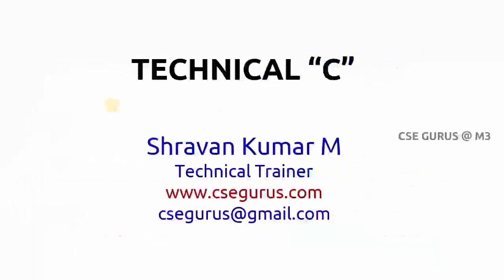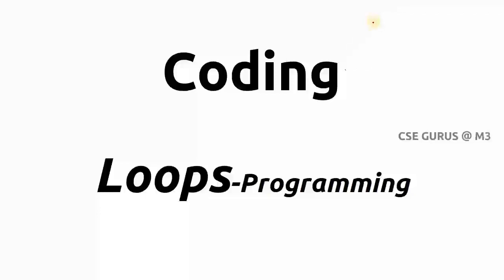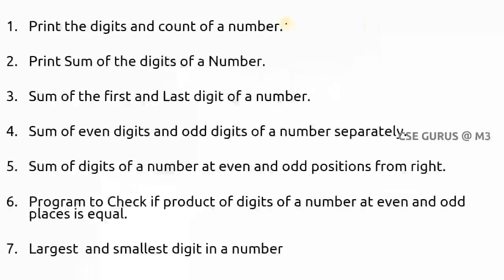Welcome to the video lectures on Technical C by Shravan Kumar Mantri. We'll see questions one by one with execution and output. The first question is printing the digits and count of a number. For example, if n equals 523, the digits are 5, 2, and 3 — or in reverse order, 3, 2, and 5.